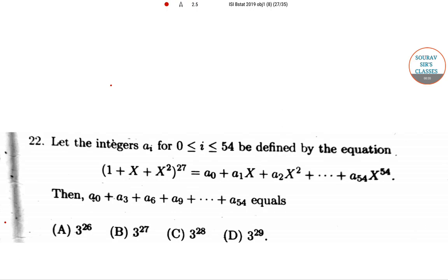Hello students, welcome to the sort of sets classes. Today I am going to solve an ISI B.Stat 2019 objective question. The question is number 22: let the integers aᵢ for 0 ≤ i ≤ 54 be defined by the equation (1 + x + x²)^27 = a₀ + a₁x + a₂x² + ... + a₅₄x^54. You have to find the value of a₀ + a₃ + a₆ + a₉ + ... + a₅₄. The options are: A) 3^26, B) 3^27, C) 3^28, D) 3^29.